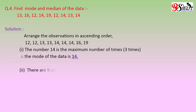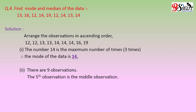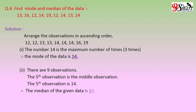Now we have to find the median. There are 9 observations. The 5th observation is the middle observation. The 5th observation is 14. Therefore, the median of the given data is also 14.